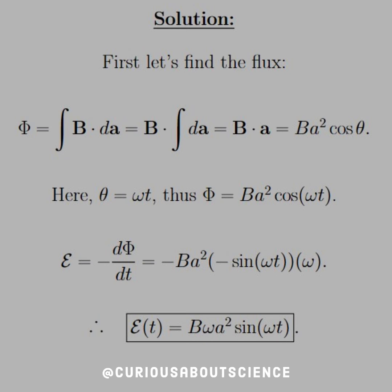We know that cosine is equal to omega t, because omega is just radians per second, so if I multiply by seconds, I get radians — unit-wise, we're good to go. Therefore, the flux is equal to B A squared cosine omega t.